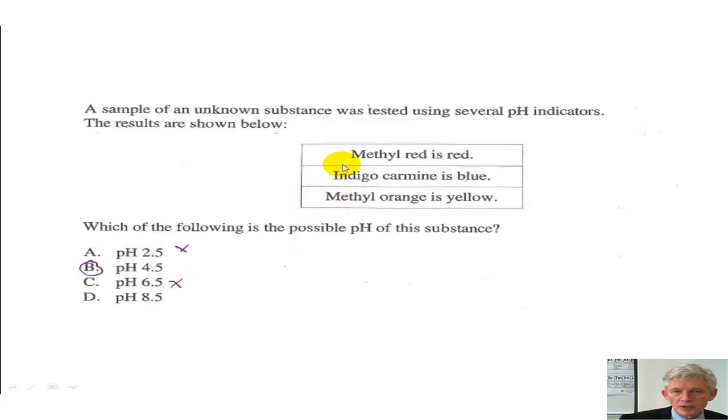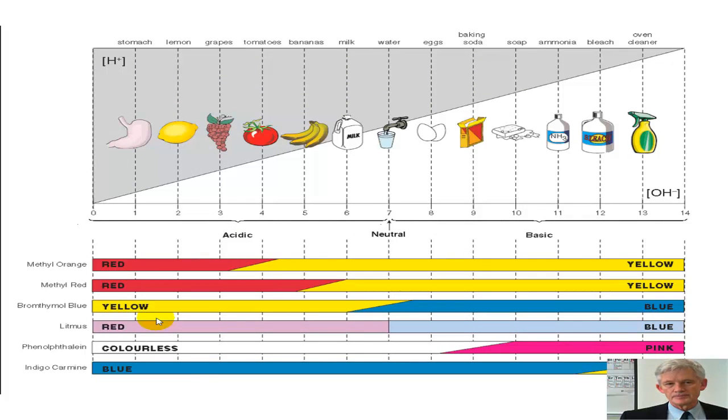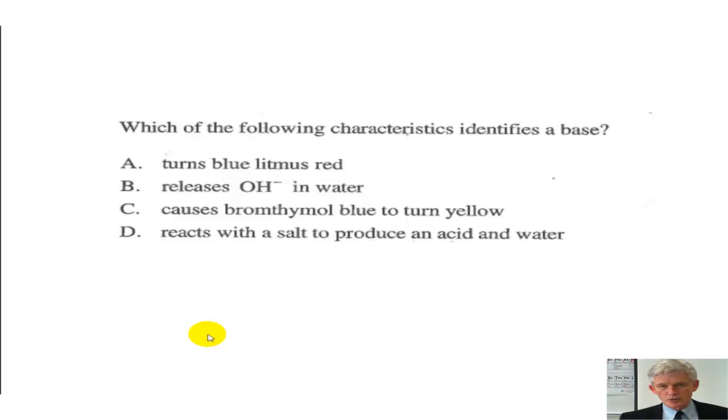You're looking for any one of these that is not true. pH of 8.5 - at a pH of 8.5, methyl red is going to be yellow. They say it's red, so this one, no go. So get used to using that chart because you can see where at 2.5, bring it down, you can see what color methyl orange is. Methyl orange is red at 2.5. Methyl red is red. Indigo carmine is blue at 2.5.